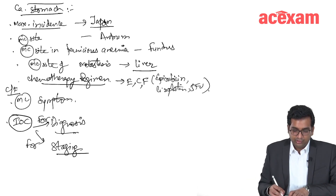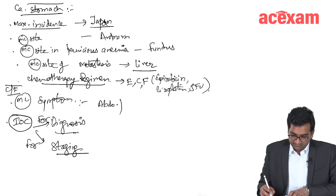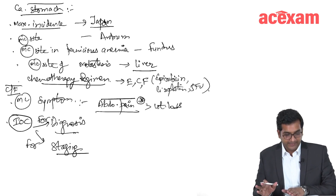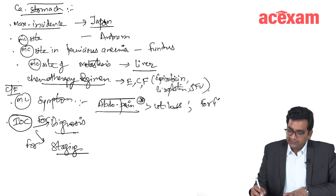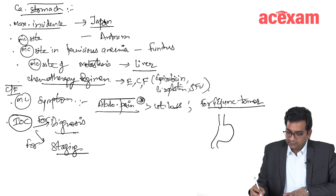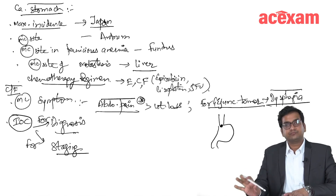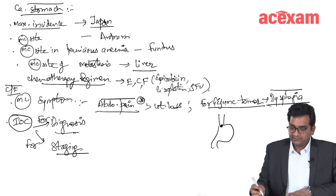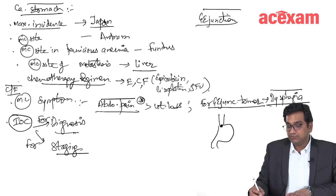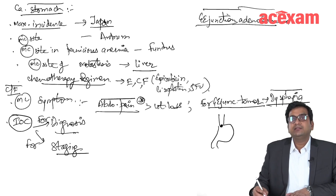The most common symptom is abdominal pain followed by weight loss. For GE junction tumors, the most common symptom is dysphagia. There is a separate classification for GE junction adenocarcinomas known as the modified Sievert classification.